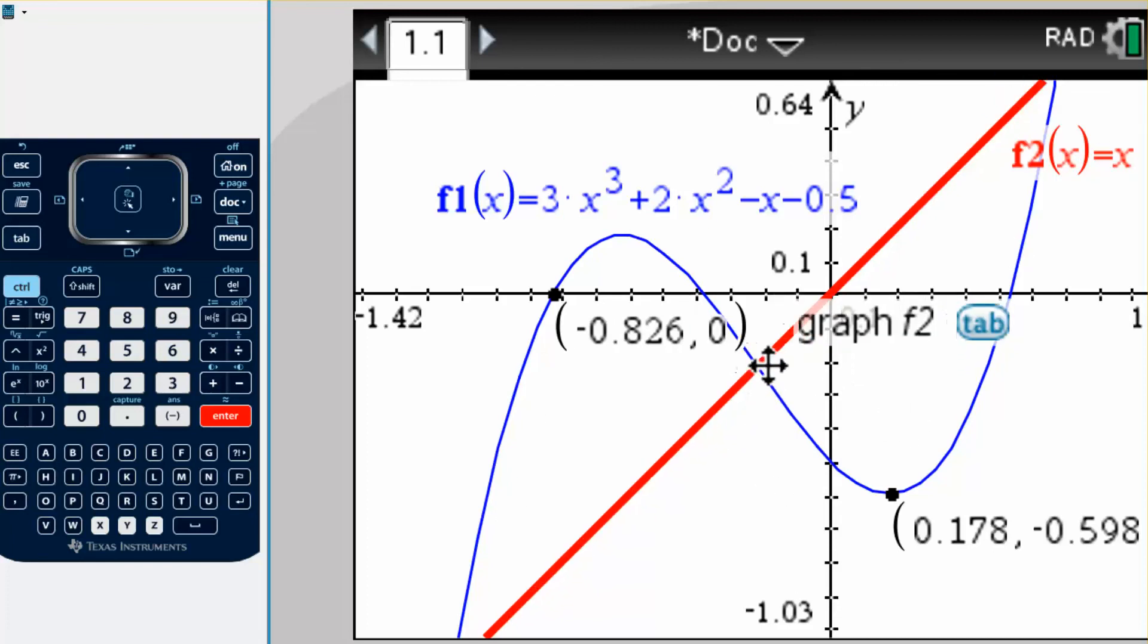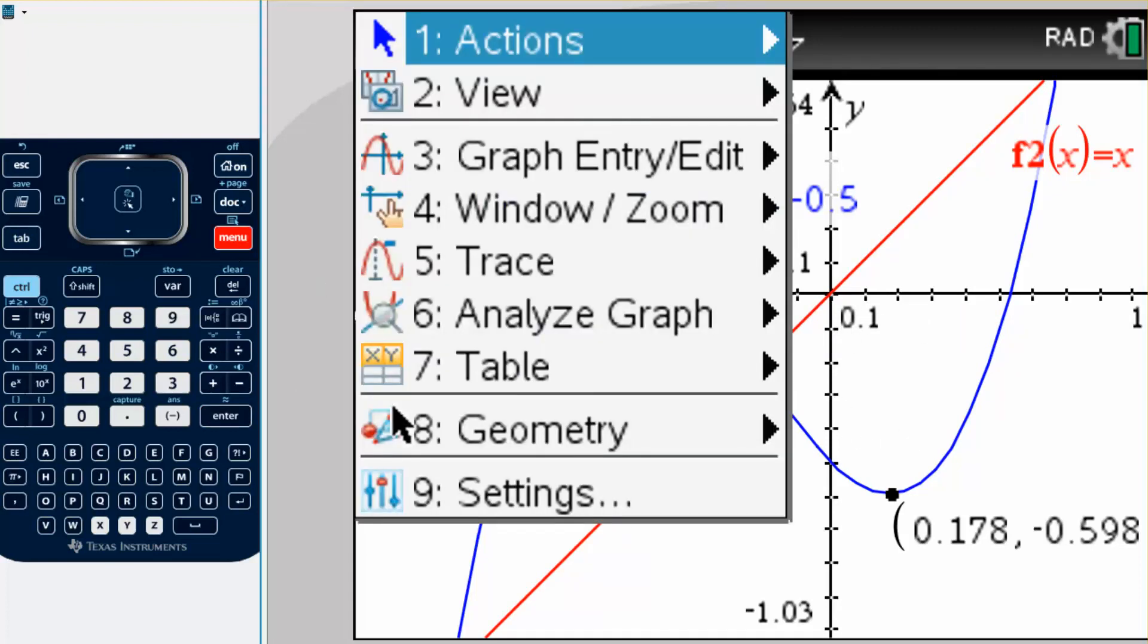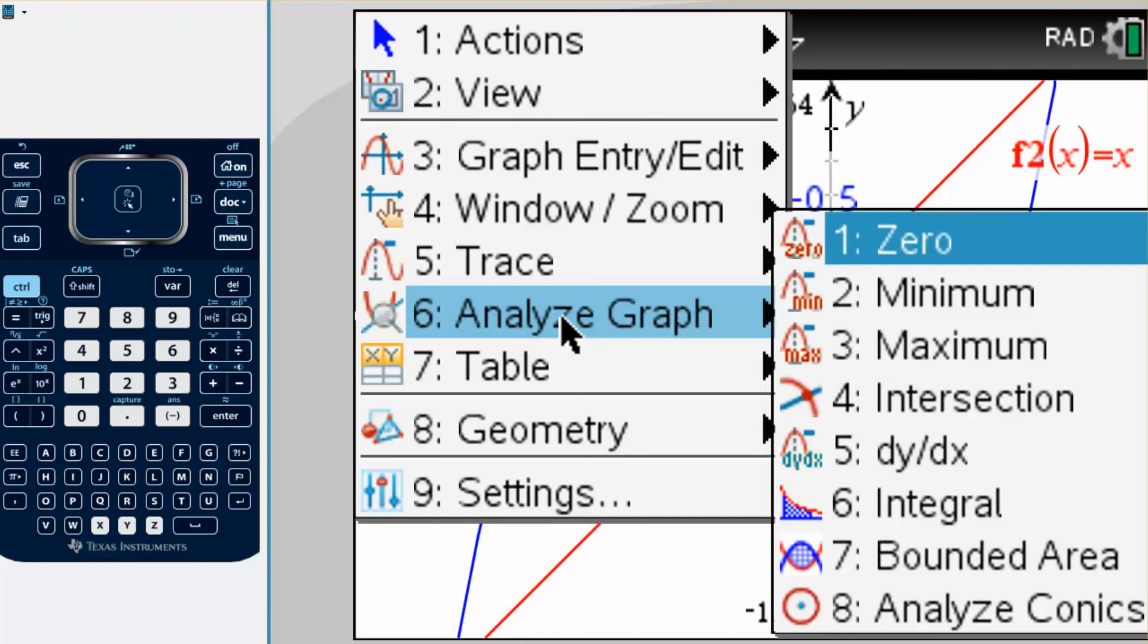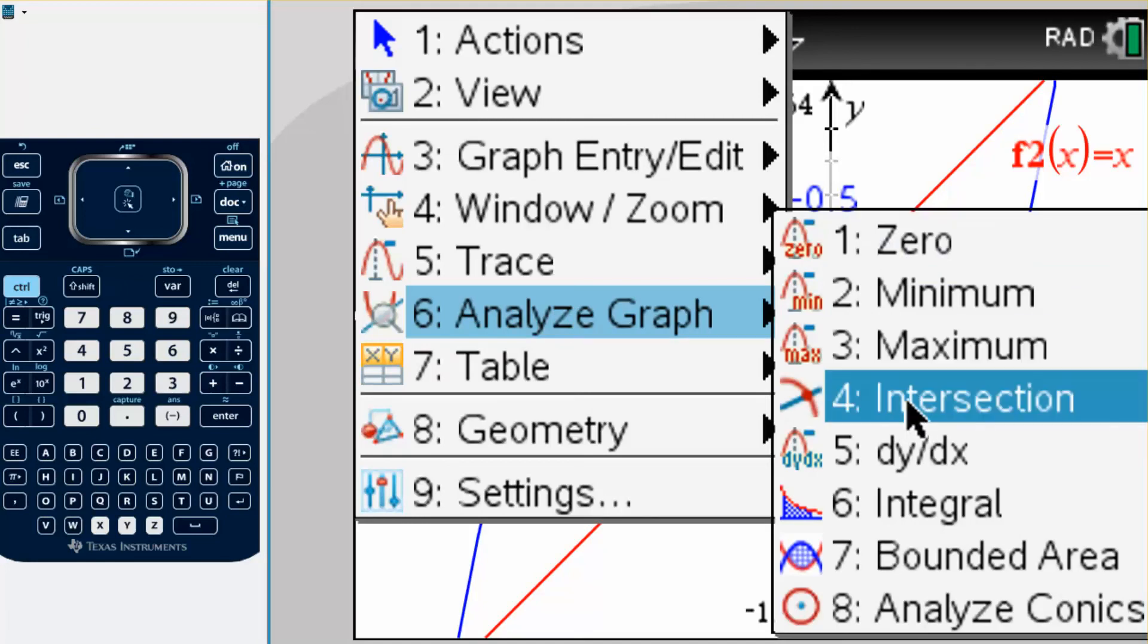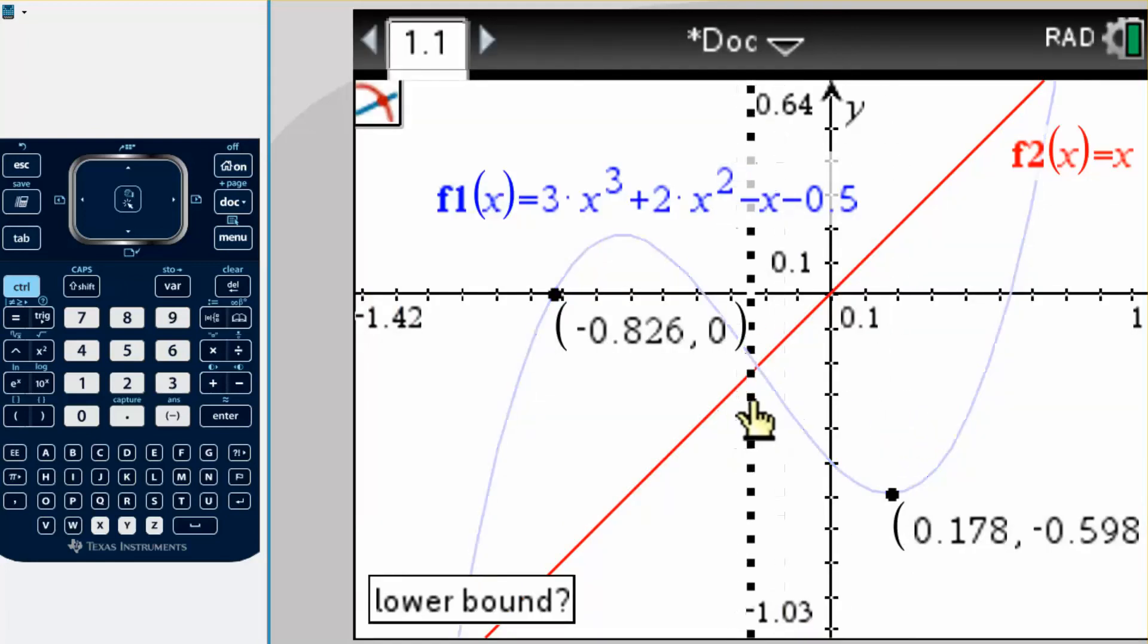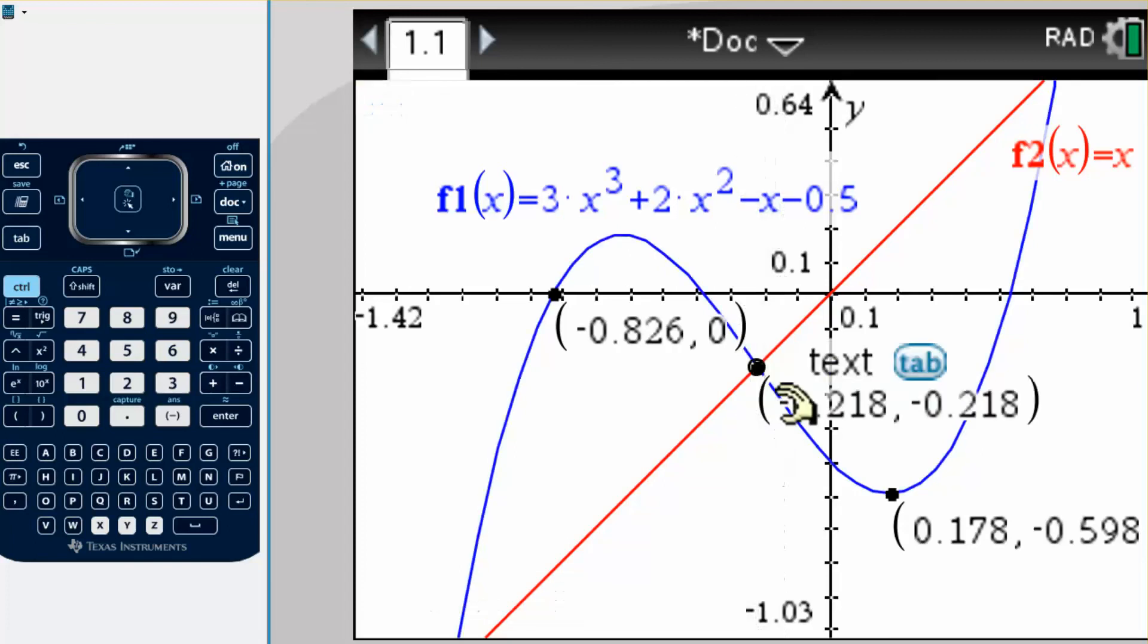Let's say I want to know where they cross, so that point right there. We're going to do the same thing, but we just need to choose the intersection point now. So we'll go menu, analyze graph, and then down to number four intersection. We're going to do the same thing, you just go to the left of where you think they intersect, to the right of where you think they intersect.